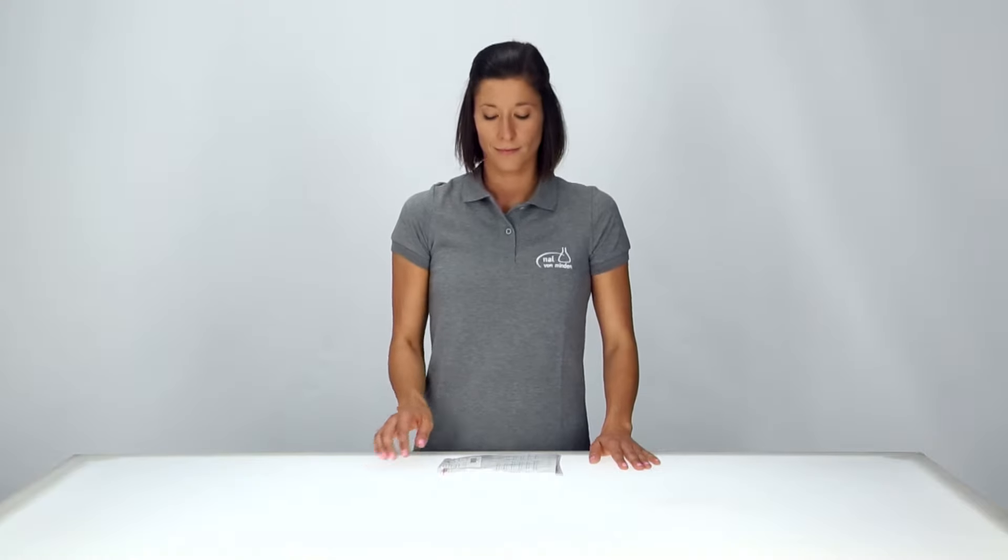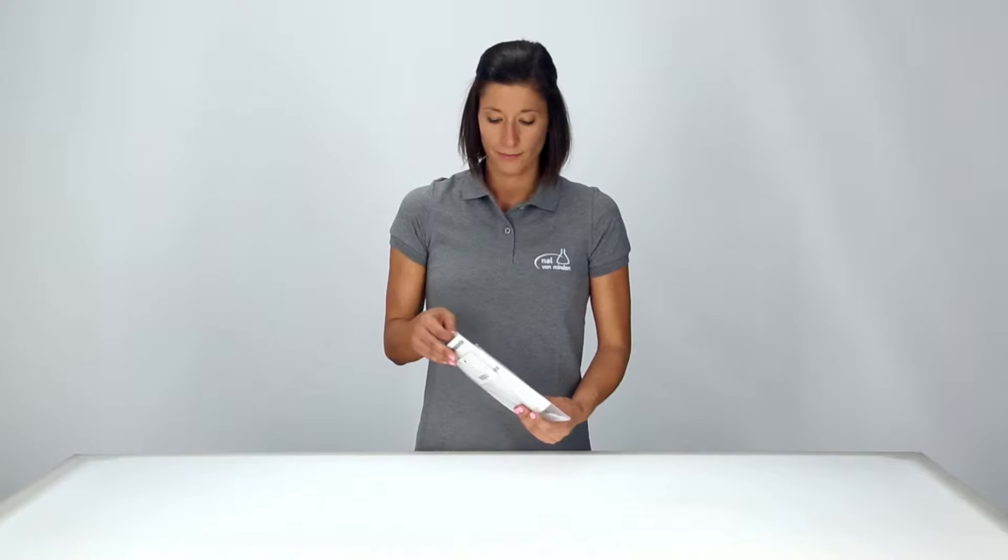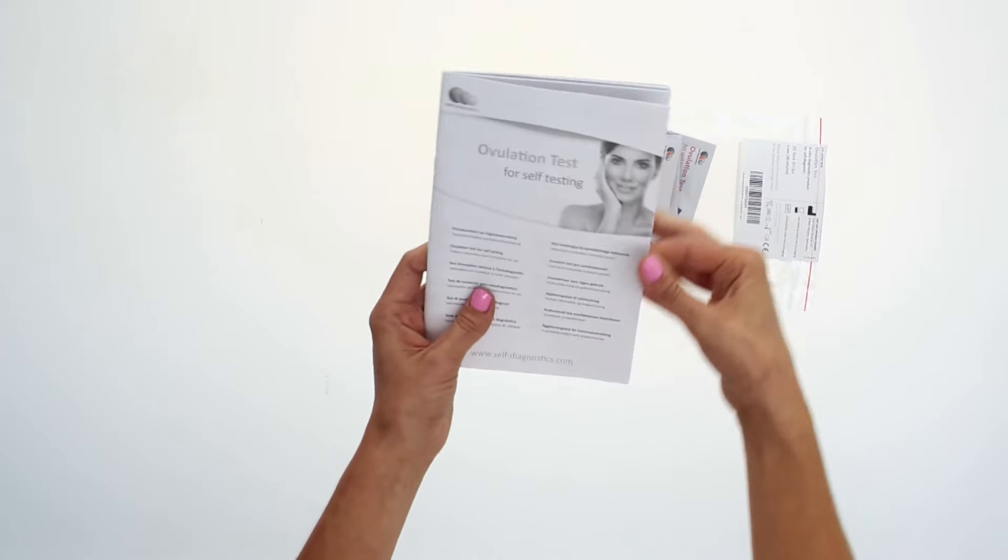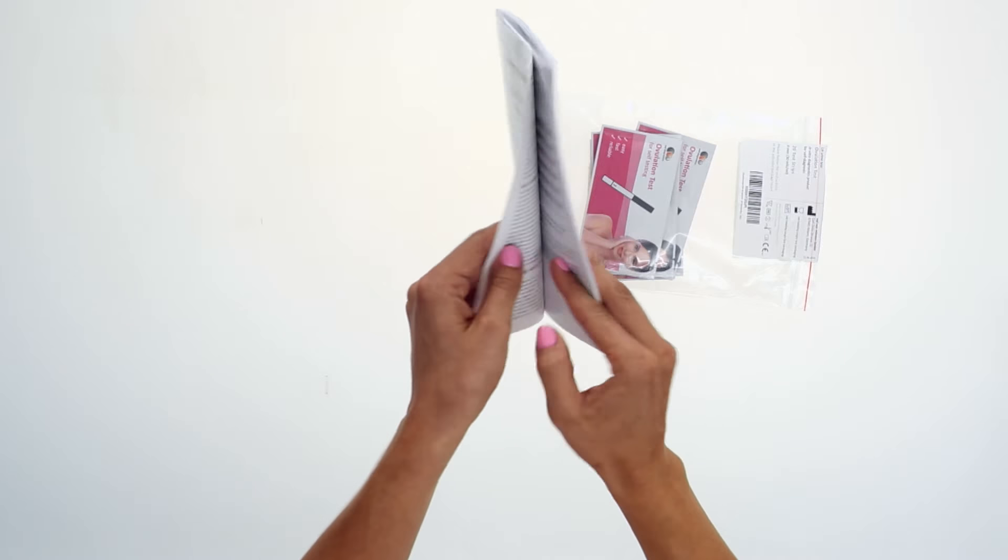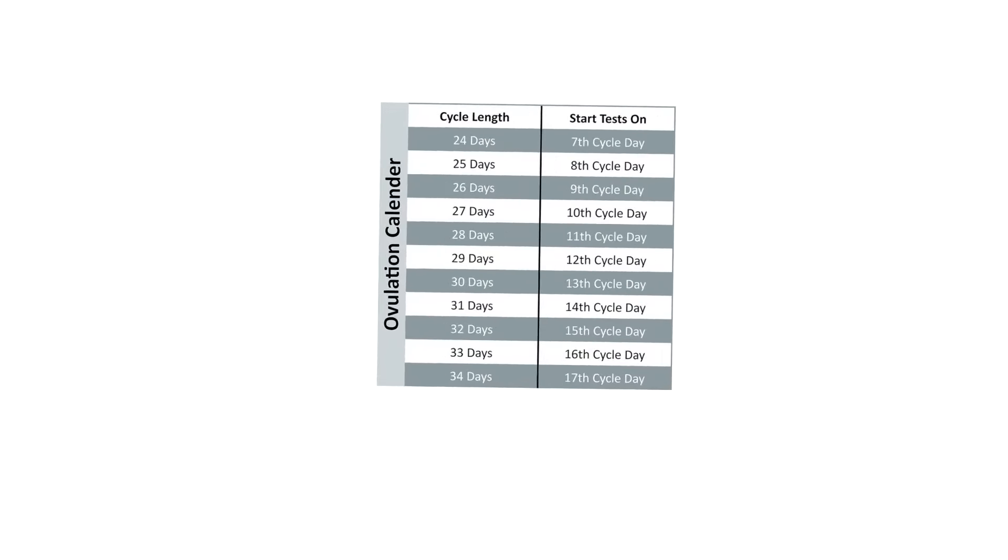You can become pregnant for approximately five days of your cycle. You should begin performing the test on the days before you expect to ovulate. Use the table provided to help determine when you should start testing.